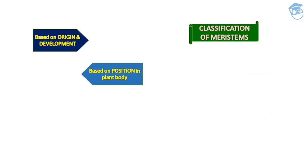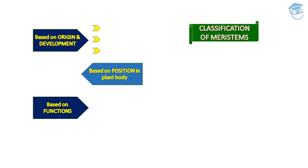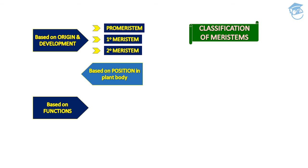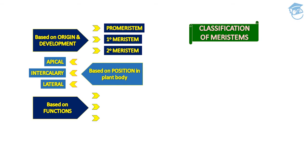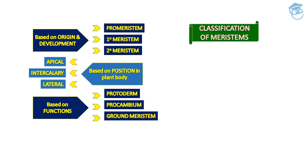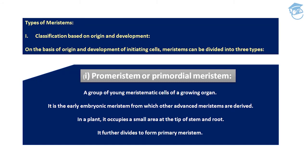The classification of meristem is based on three criteria: origin and development, position in the plant body, and function. Based on origin and development, they are of three types: pro meristem, primary meristem, and secondary meristem. Based on position in the plant body, they are divided into apical, intercalary, and lateral. Based on function, they are again divided into three: protoderm, pro cambium, and ground meristem.